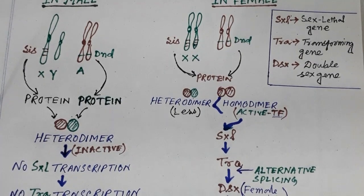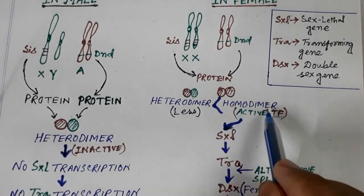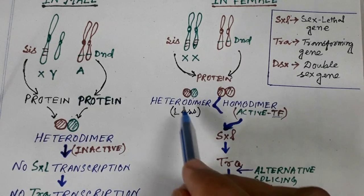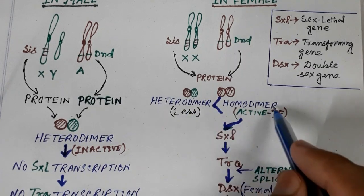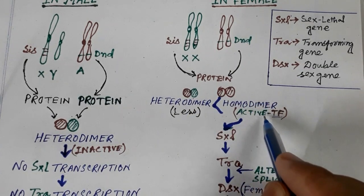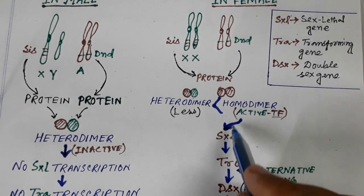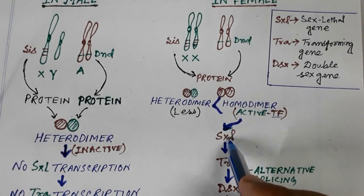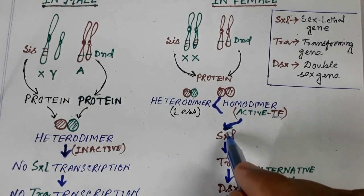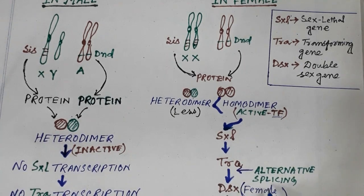In the female pathway, the homo dimer is the active transcription factor of the sex-lethal gene. So the sex-lethal gene is activated, leading to triactivation of downstream targets. The DSX gene undergoes transcription of its pre-mRNA, which is then processed differently in males and females.